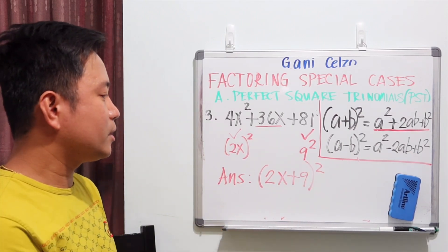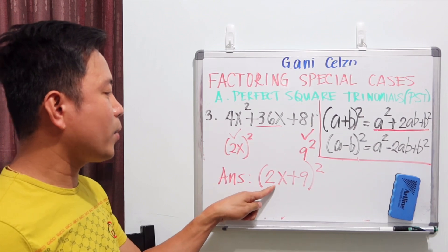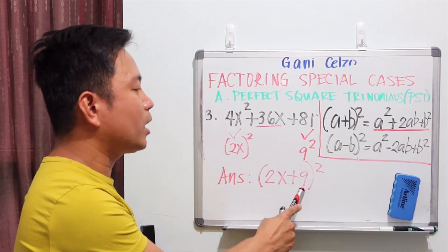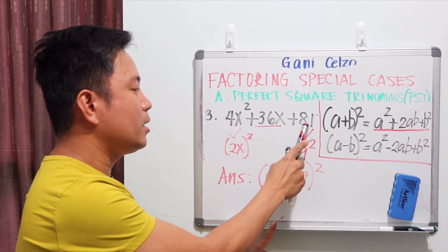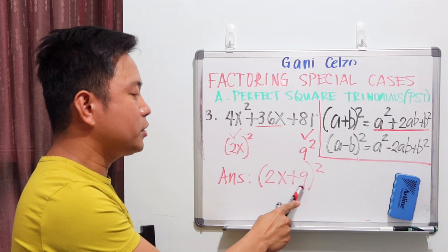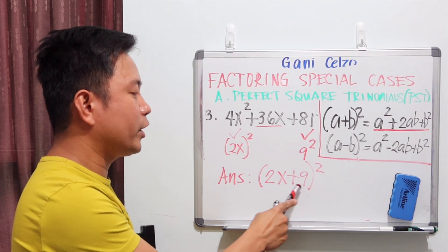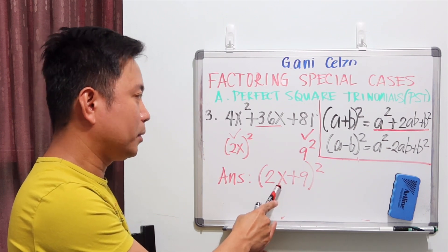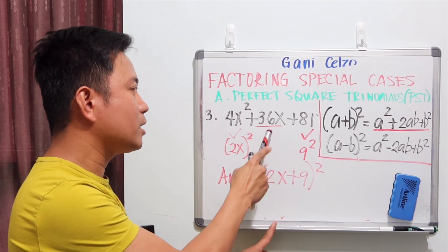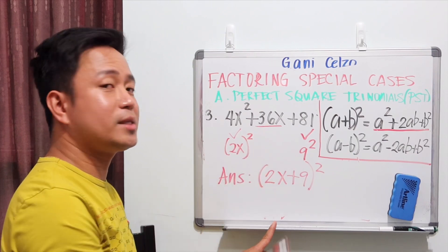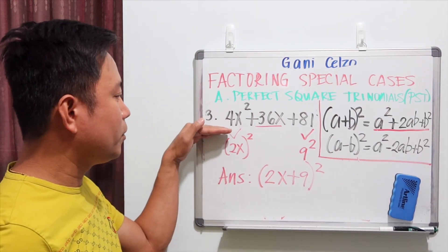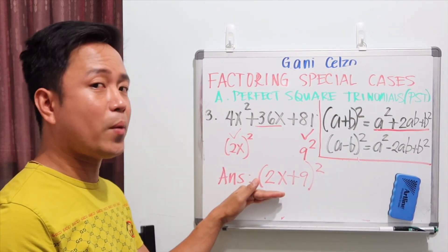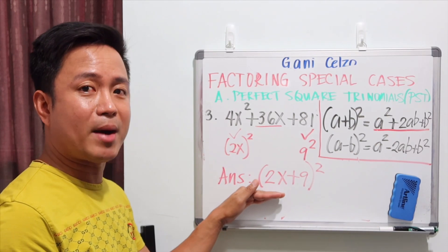Because (2x)² is 4x², and 9² is 81. If you multiply the two terms, that's 18x; double 18x, you get 36x. So this trinomial is the same thing as the square of this binomial.